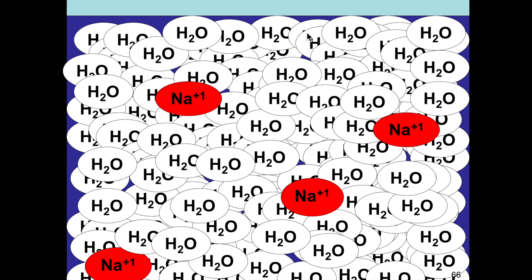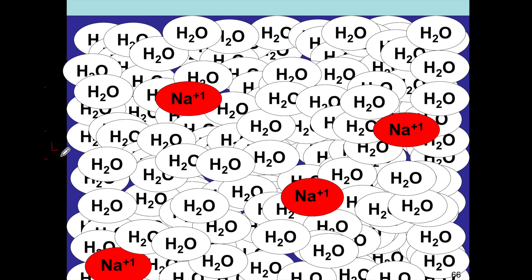So out of a total of 100 particles, four of them are sodium ions — this is referred to as 4 PPH.